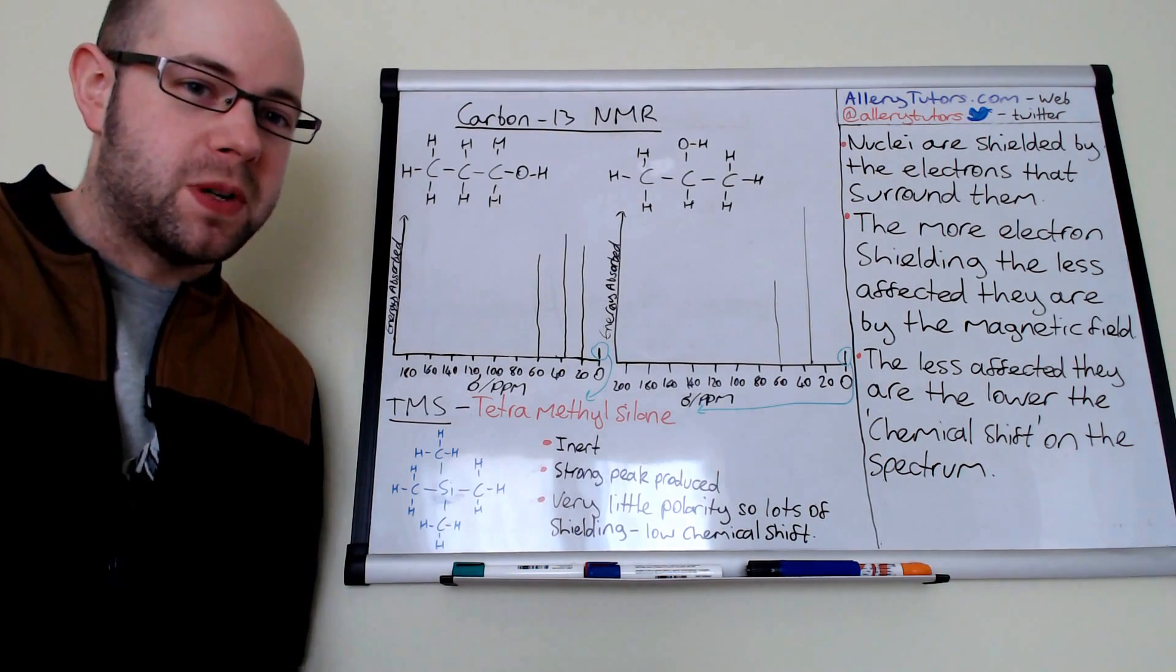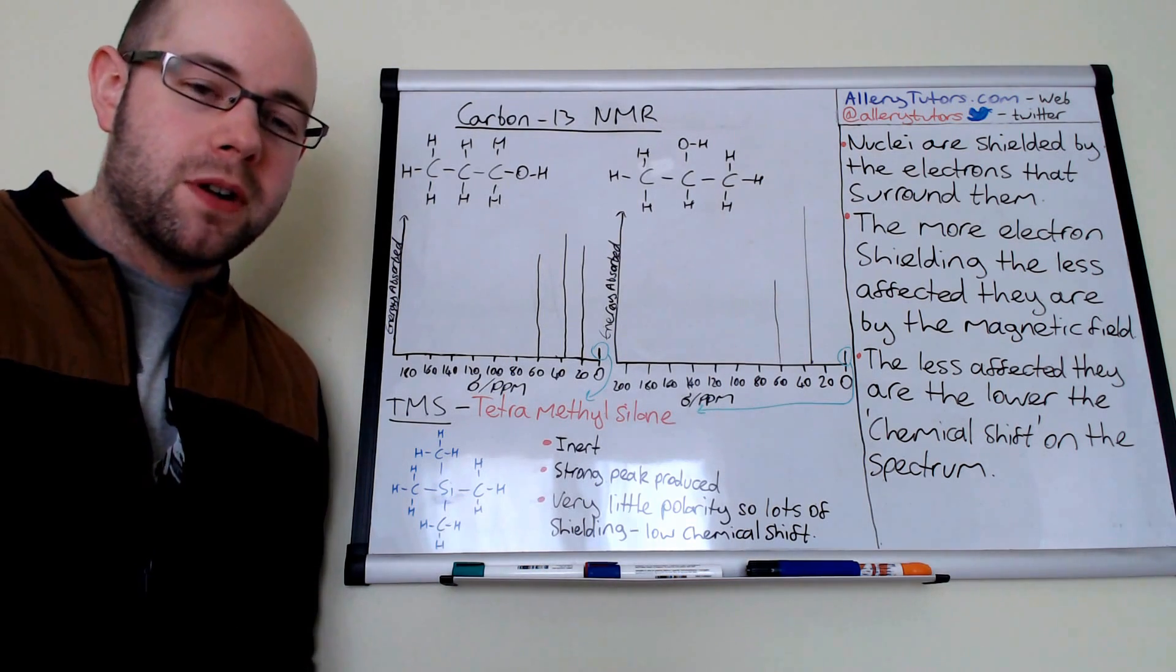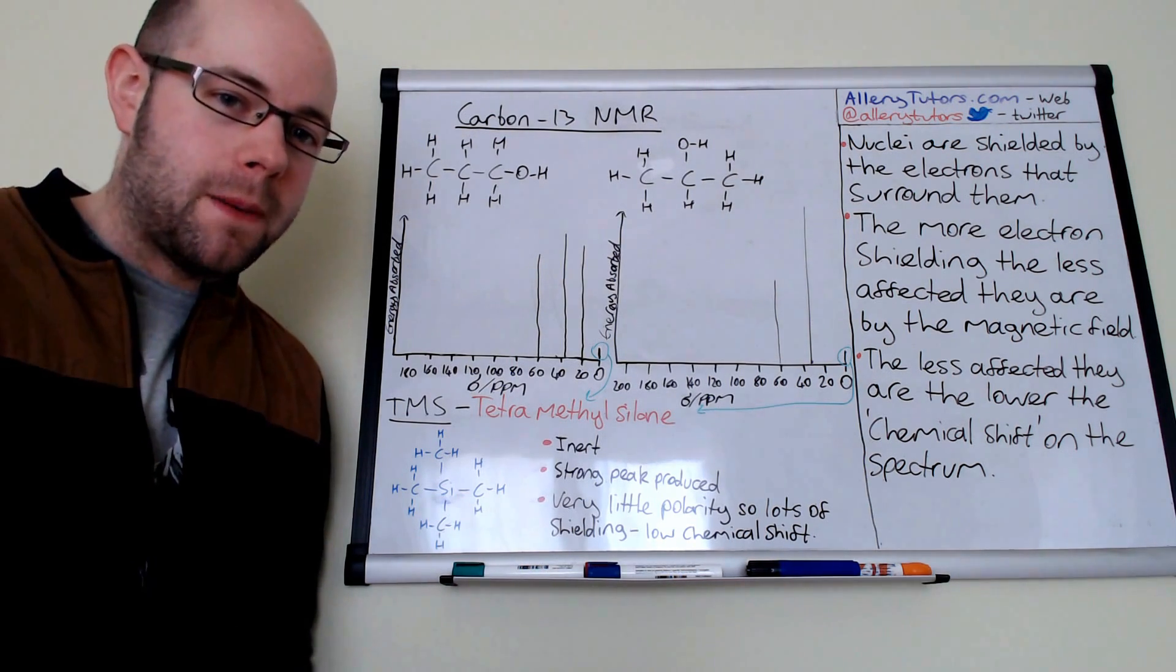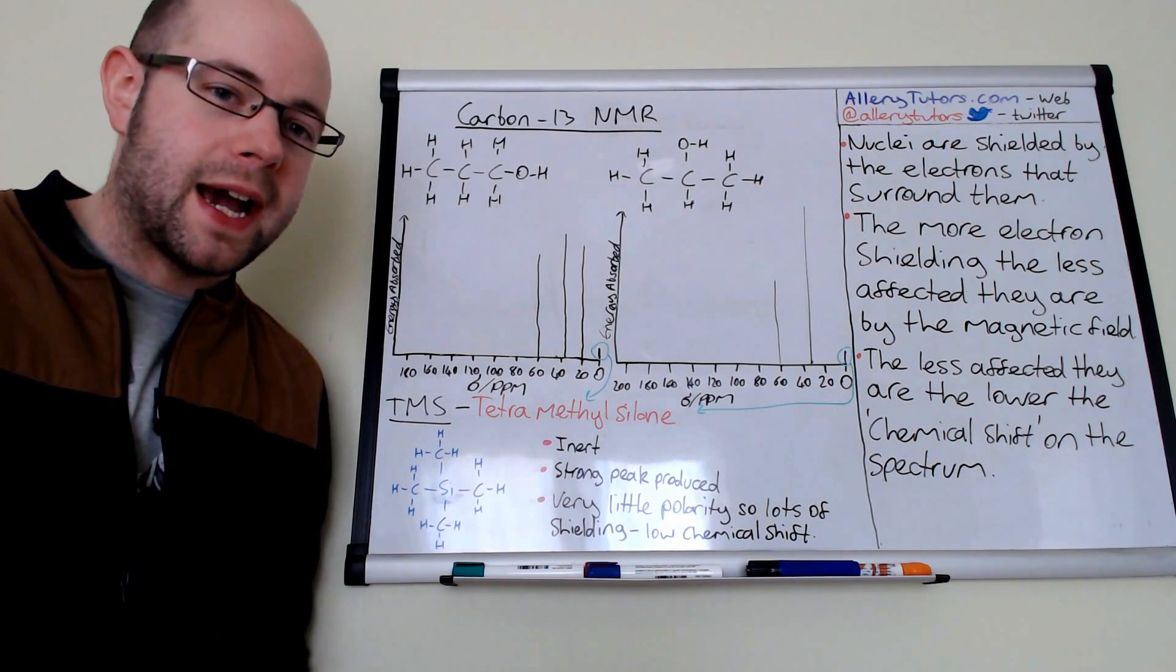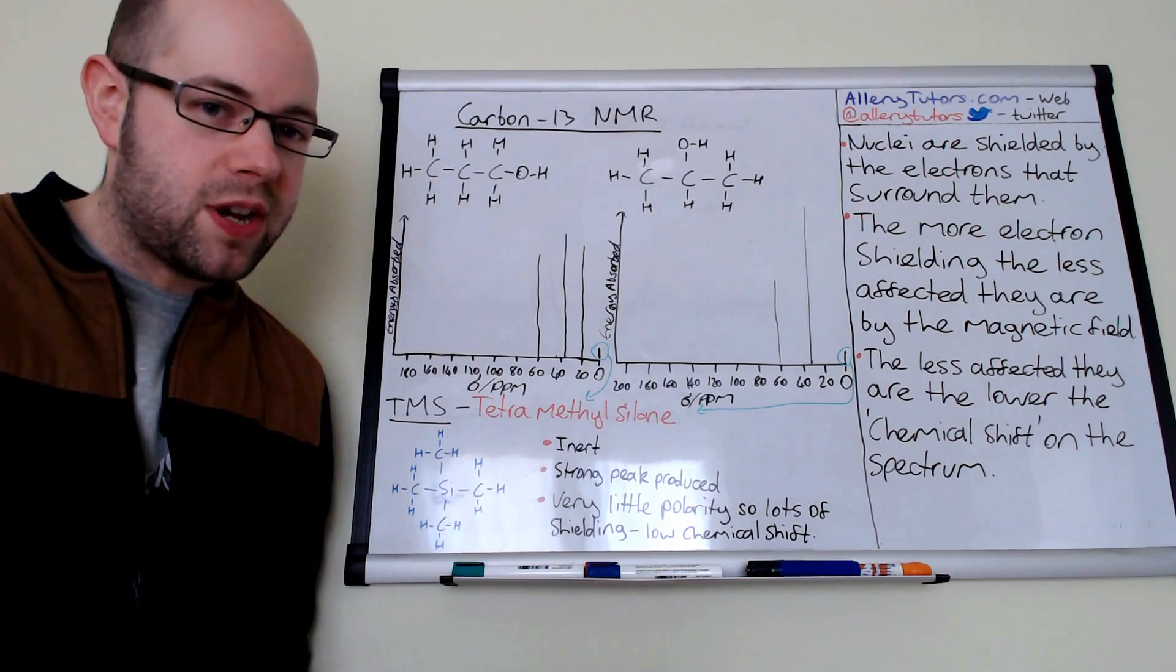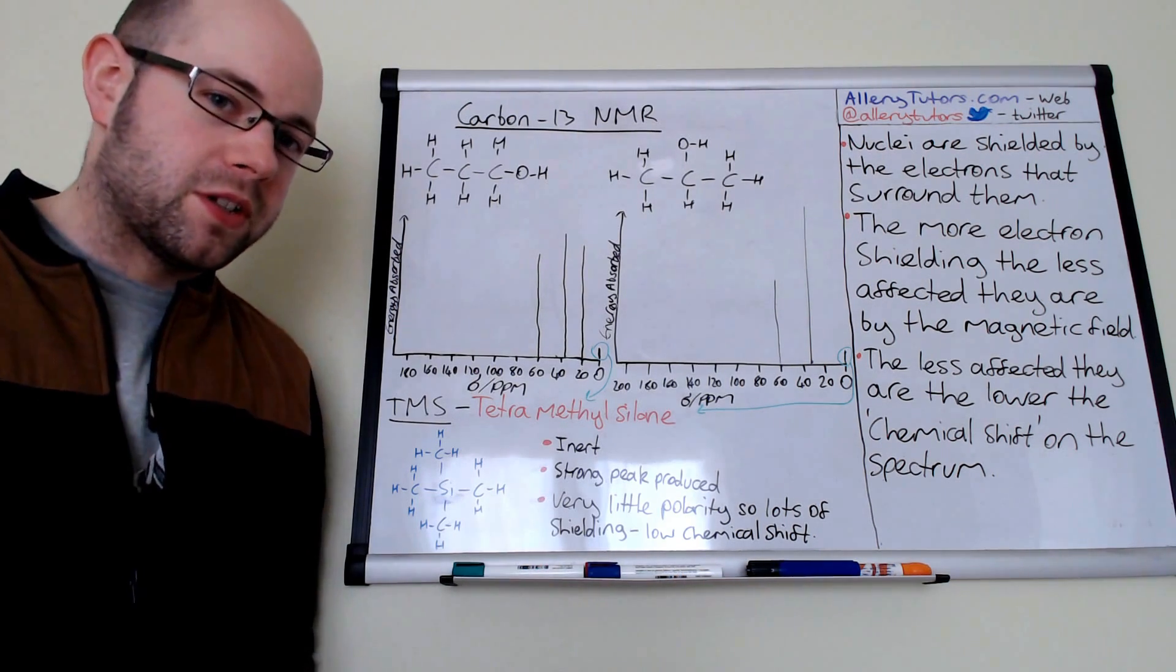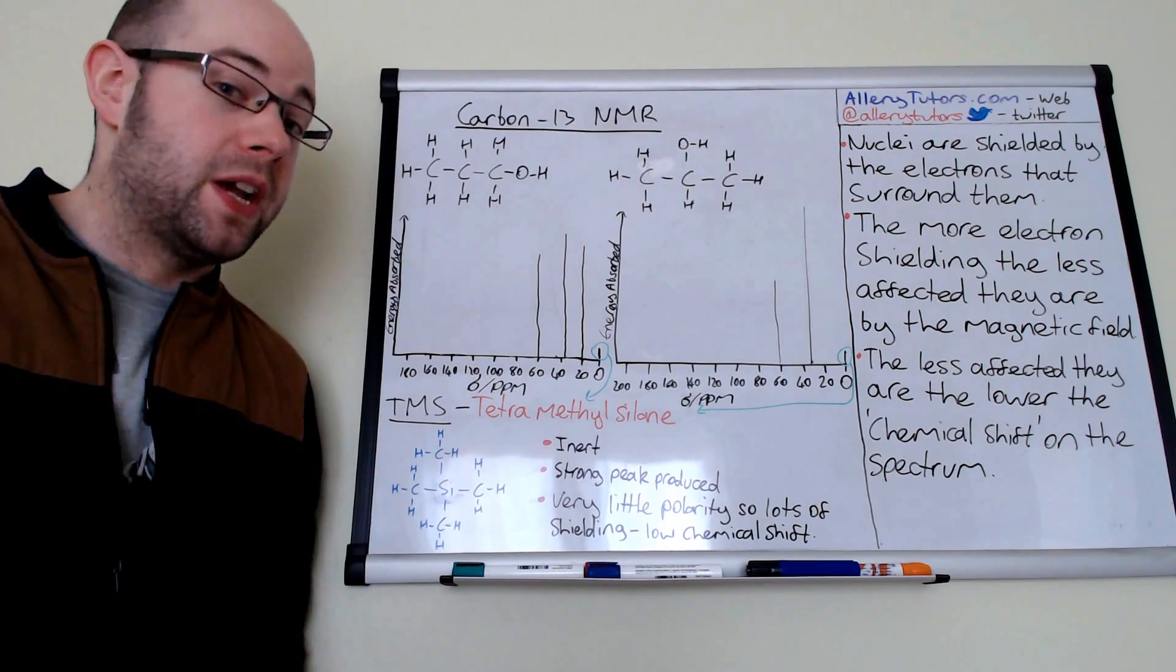Just briefly, we're going to be looking at carbon-based molecules, so organic molecules. We're going to be looking at their respective carbon-13 NMR spectra. We're also going to be looking at electron shielding and its effect on something called chemical shift. And we're also going to be looking at a substance called TMS and what role it plays in NMR.